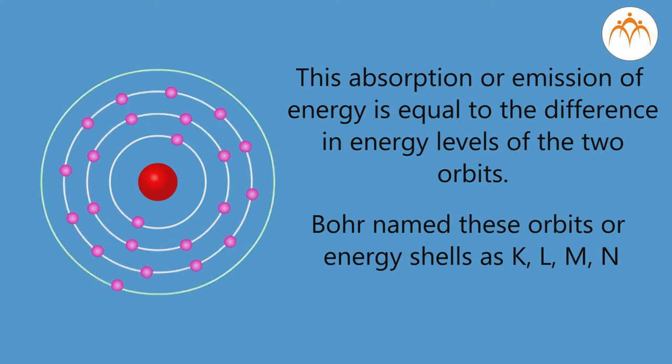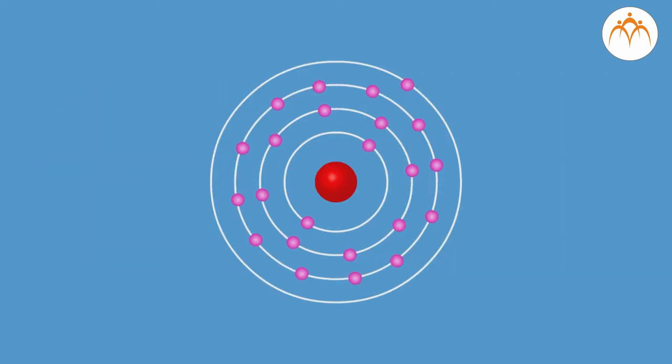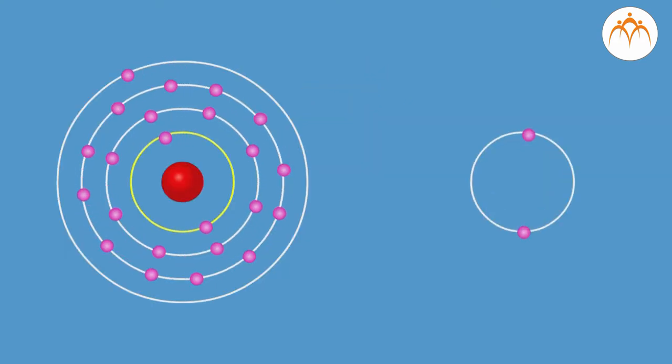Bohr named these orbits or energy shells as K, L, M and N, starting from the shell closest to the nucleus.